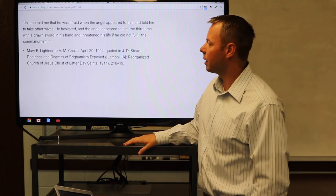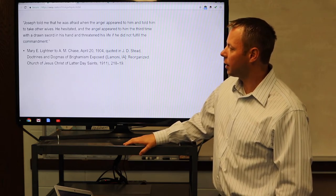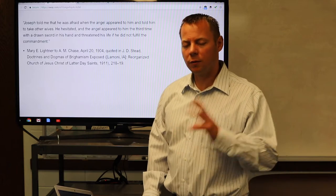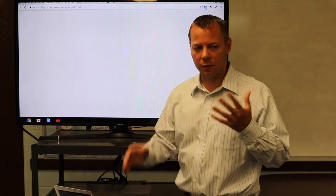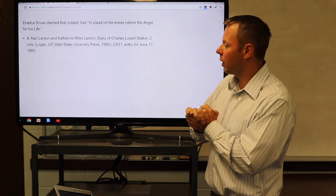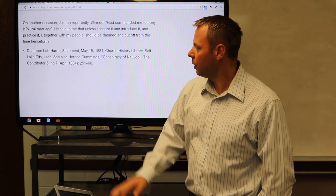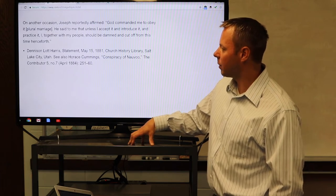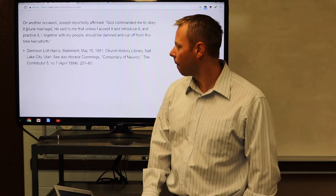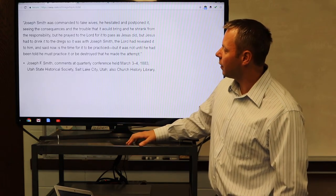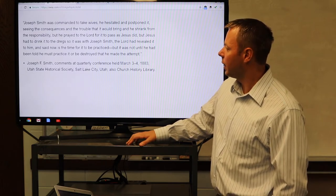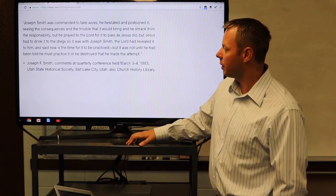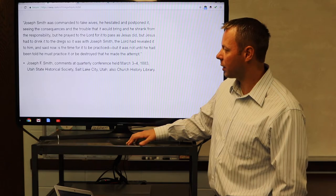The chronology further supports the likelihood that sometime before April 5th, 1841, when the prophet was sealed to plural wife Louisa Beaman, the angel returned for a second visit to admonish Joseph to use the sealing authority. Mary E. Leitner says: Joseph told me he was afraid when the angel appeared to him and told him to take other wives. He hesitated and the angel appeared to him the third time with a drawn sword in his hand and threatened his life if he did not fulfill the commandment. We have about 20 different recollections of this angelic visit with the drawn sword. According to Erastus Snow, Joseph had to plead on his knees before the angel for his life. On another occasion, Joseph reportedly affirmed: God commanded me to obey it. He said to me that unless I accept it and introduce it and practice it, I, together with my people, should be damned.